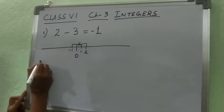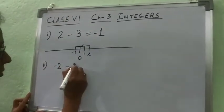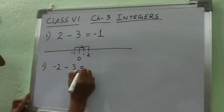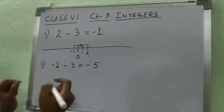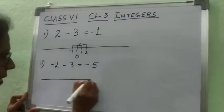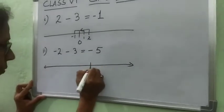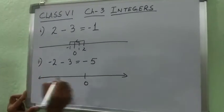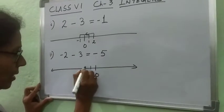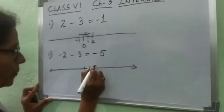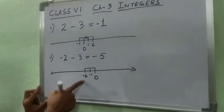Now the next question: minus 2 minus 3. After evaluating you get the result minus 5. How to represent on the number line? Starting from 0, minus 2 at first — minus 2 means negative direction. From 0 move 2 steps in the negative direction.